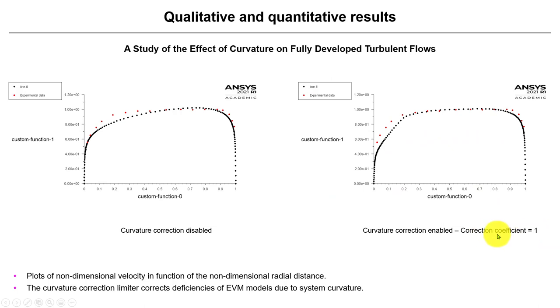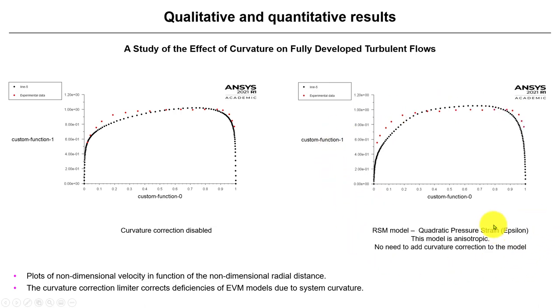So this curvature correction also have a coefficient. And so, depending on how you choose that value, you will have different an effect here in the outcome. But you said a value of one is a recommended value.